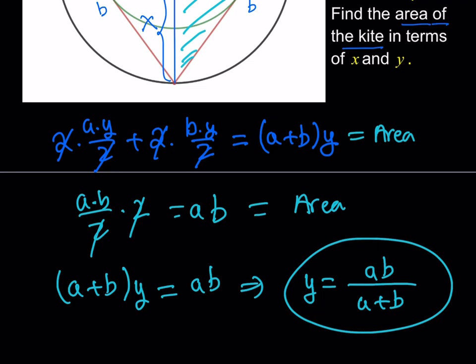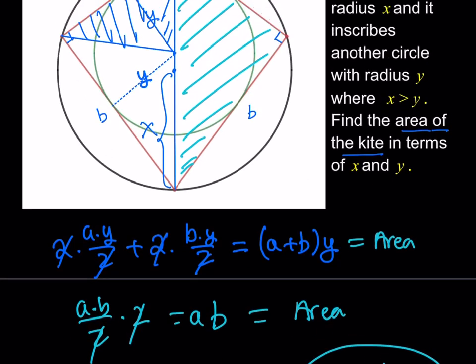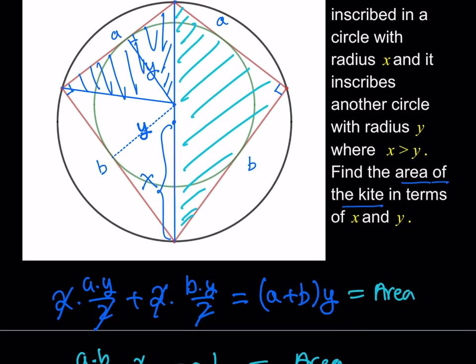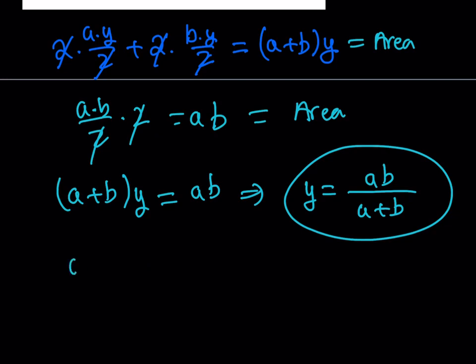And how do you find that? Well, since these are two big right triangles, like one of them is this one, for example. This is a right triangle. Its area is a times b divided by 2. So a times b divided by 2 times 2 is also going to give me the area of the kite, which is a times b.